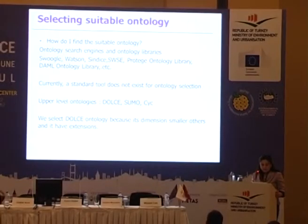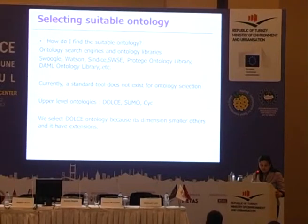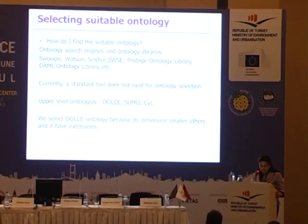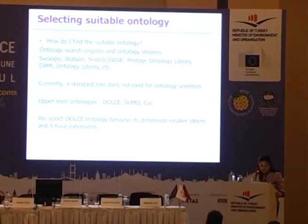How do we find a suitable ontology? There are ontology search engines and libraries such as Swoogle, Watson, Sindice, SWSI, Protege ontology library, OWL ontology library, and others. Currently, a standard tool doesn't exist for ontology selection. Upper level ontologies include DOLCE, SUMO, and BFO. We select the DOLCE ontology because its dimensions are smaller than others and it has useful extensions.